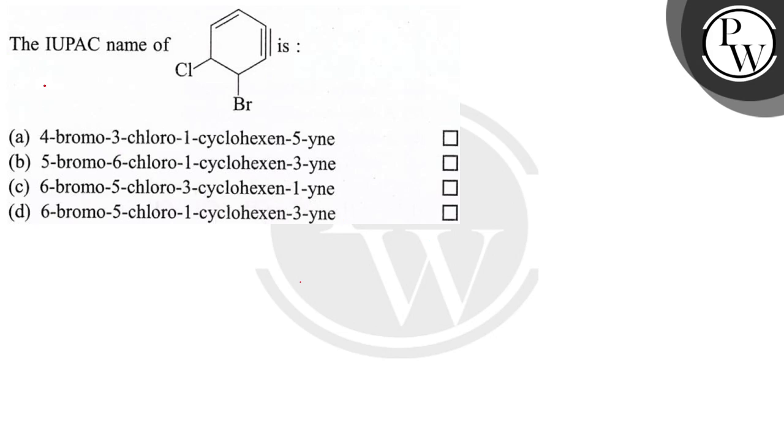Hello, let's read the question. The question says the IUPAC name of this compound is: (a) 4-bromo-3-chloro-1-cyclohexene-5-yne, (b) 5-bromo-6-chloro-1-cyclohexene-3-yne, (c) 6-bromo-5-chloro-3-cyclohexene-1-yne, (d) 6-bromo-5-chloro-1-cyclohexene-3-yne.